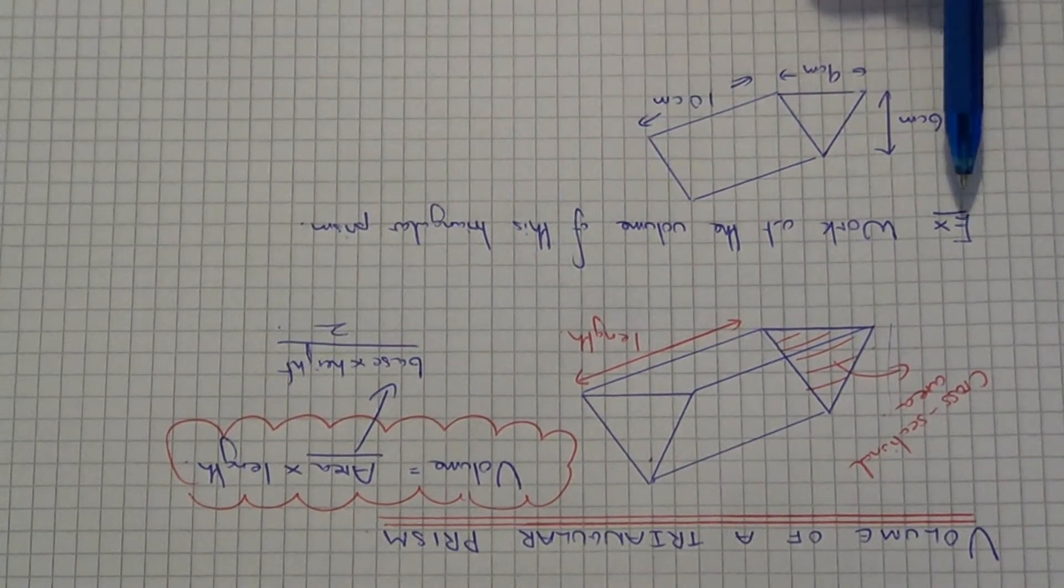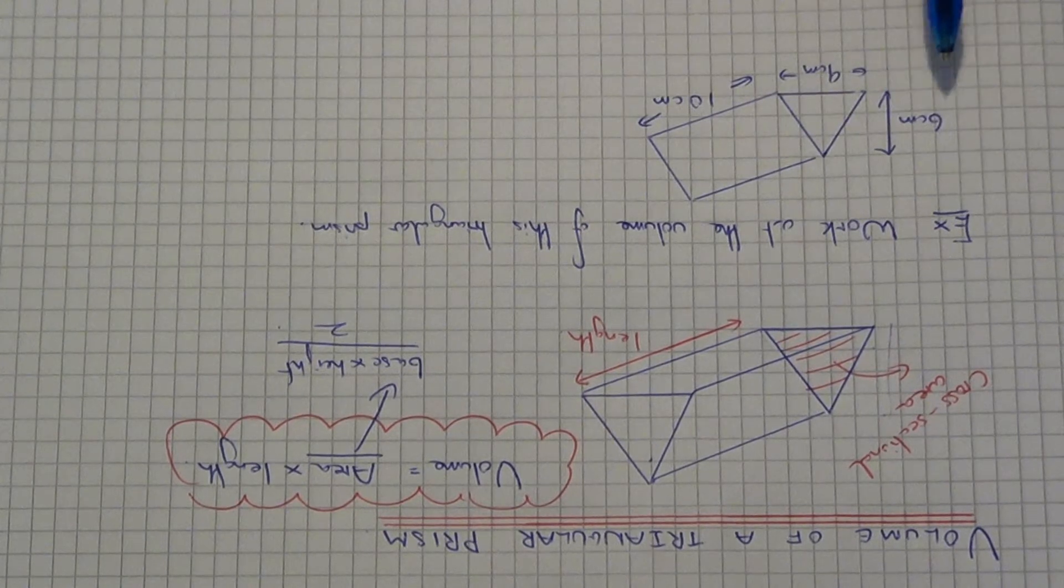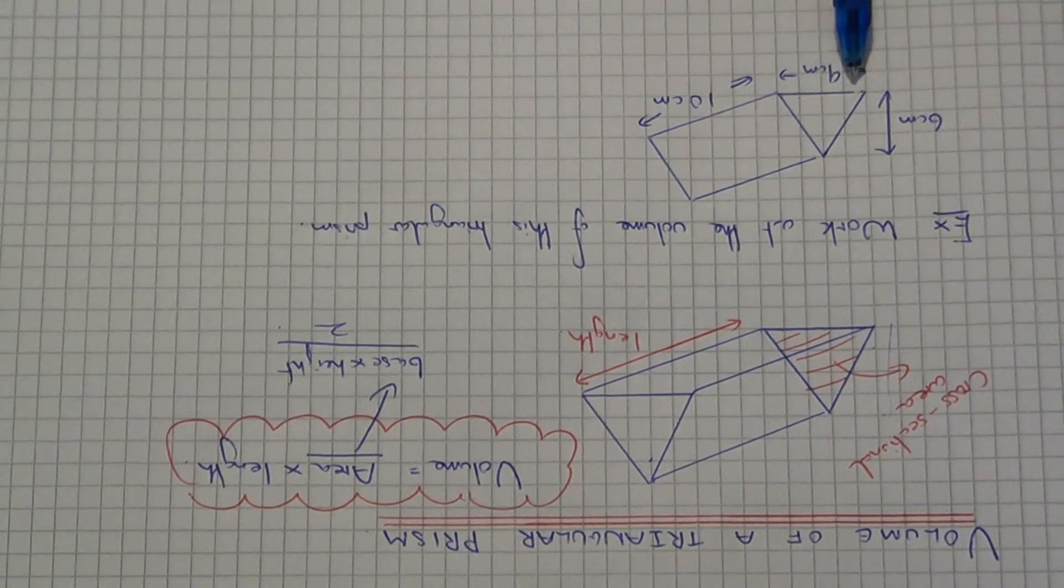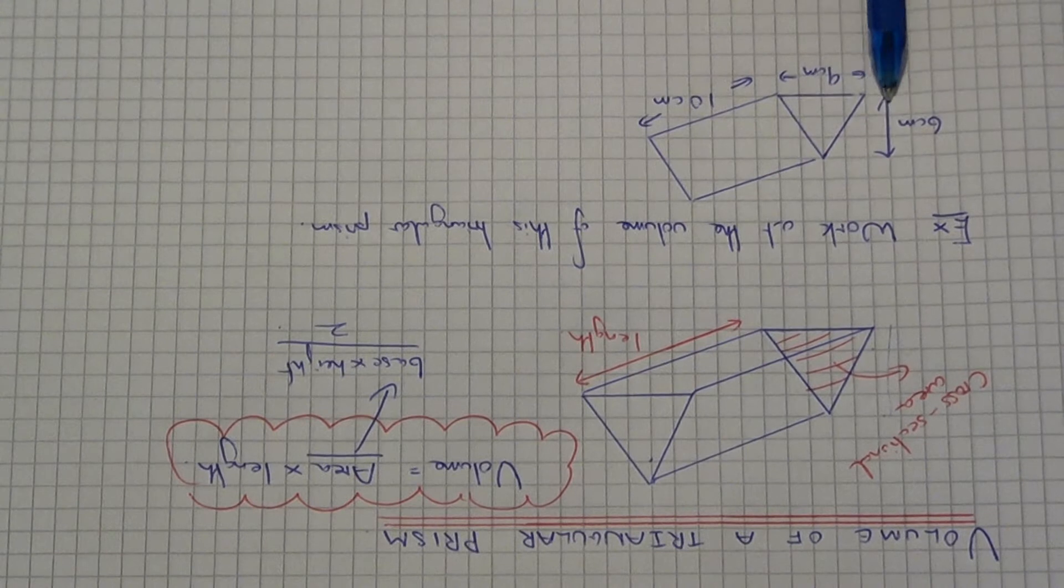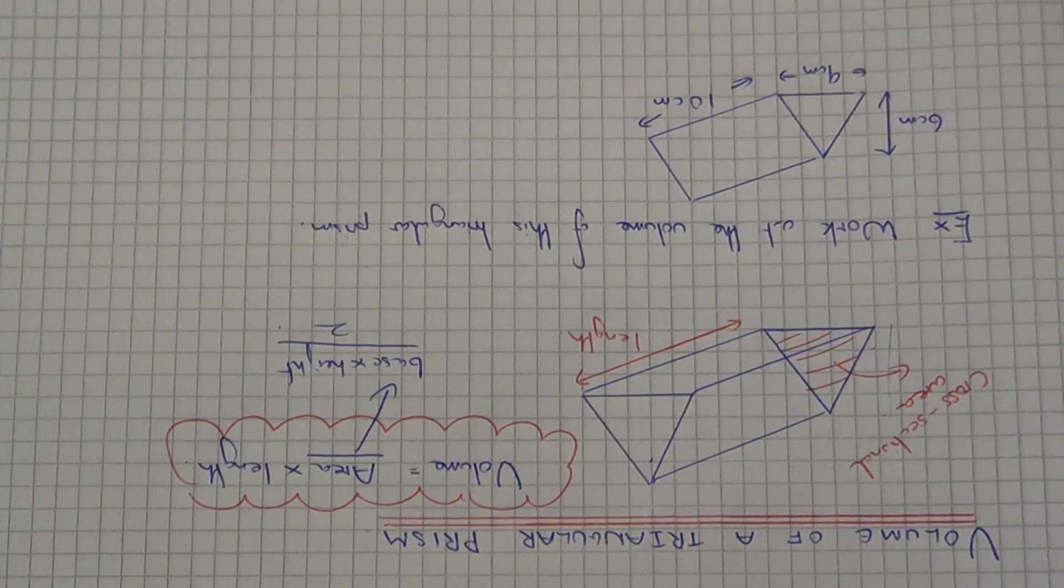So let's have a look at working out the volume of this triangular prism in our example here. We've got a base of 9, a height of 6, and a length of 10.